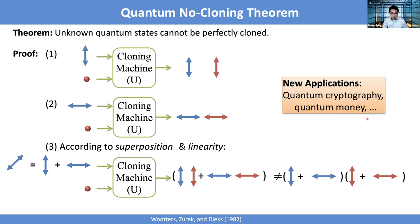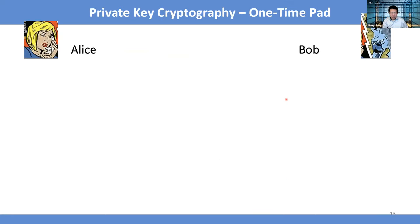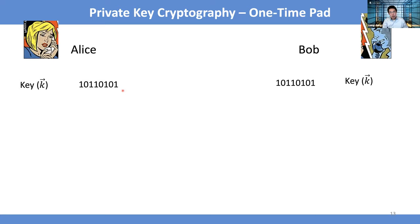An immediate implication from no-cloning is that we can do quantum cryptography. Before discussing quantum cryptography, it's good to talk about how we can communicate secretly with a private key. One way to do it: suppose two parties initially share a secret key — here it's 10110101 — which is only shared between the two parties and nobody else knows.